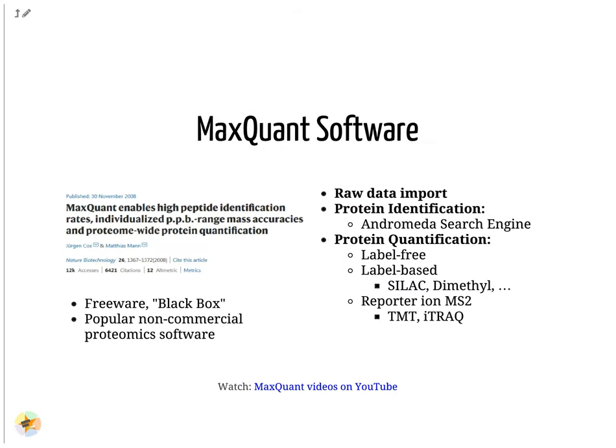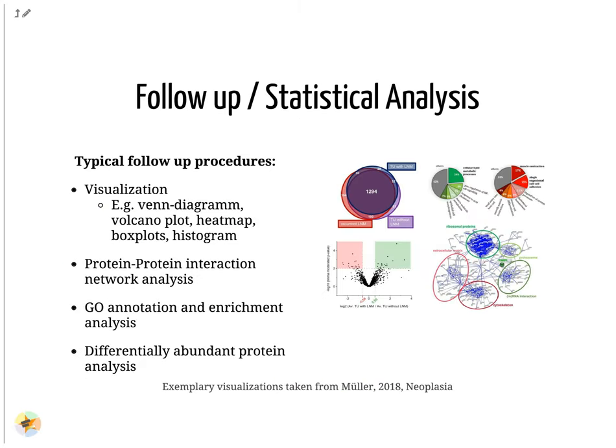MaxQuant is the most popular non-commercial software for quantitative proteomics experiments. It performs protein identification via its Andromeda search engine, and protein quantification of label-free and many label-based methods is supported as well. MaxQuant accepts raw data in vendor-specific formats. Typical follow-up analyses include visualization, network and GO-enrichment analysis.